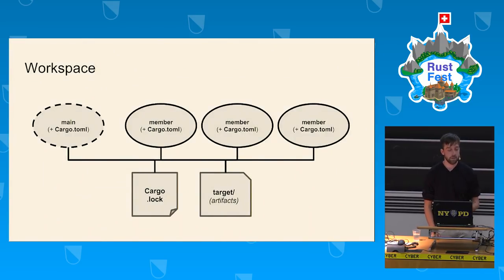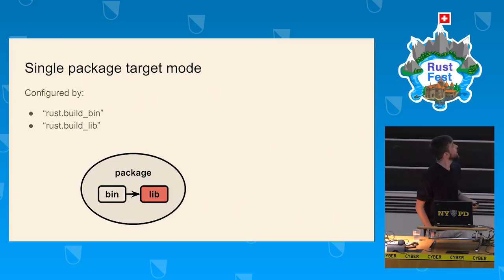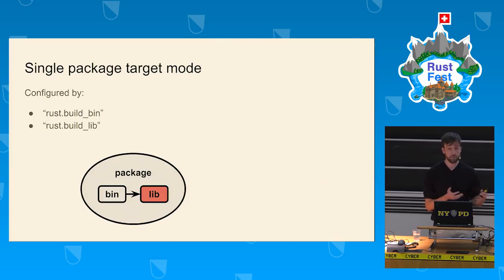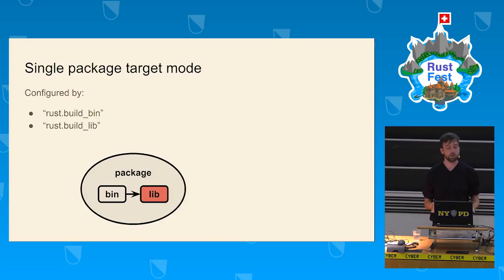Up until this point, the RLS only supported a single package target, which is quite limiting. Even a single package can contain both a binary and a library target. If you want to work on your library, you only get diagnostics and IDE features for whichever target is active. Since the library hosts almost all the implementation and the binary is mostly a thin wrapper, switching to the binary target loses all the IDE features for the lib — the most important part.